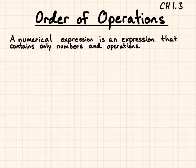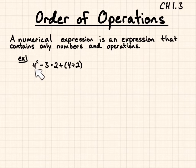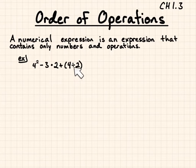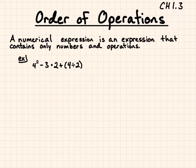An example of this would look like this: 4 squared minus 3 times 2 plus, in parentheses, 4 divided by 2, in parentheses. This is a numerical expression.